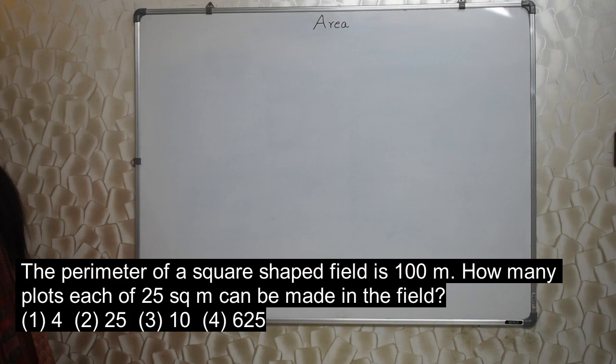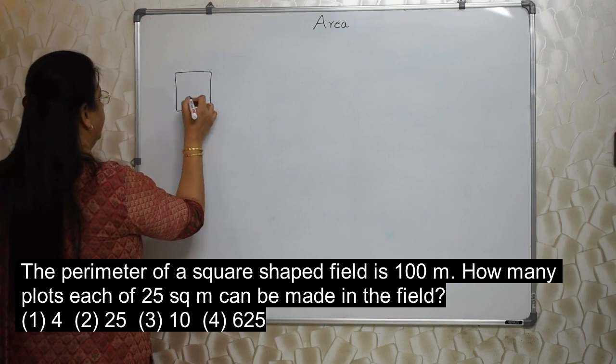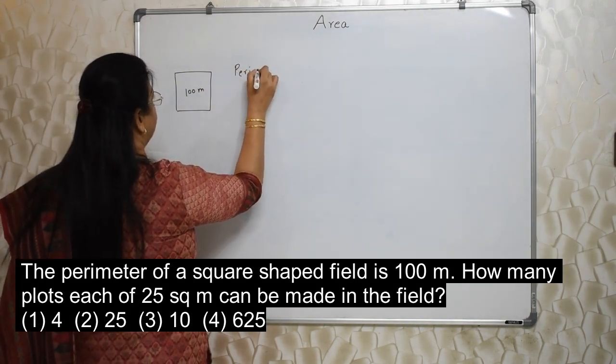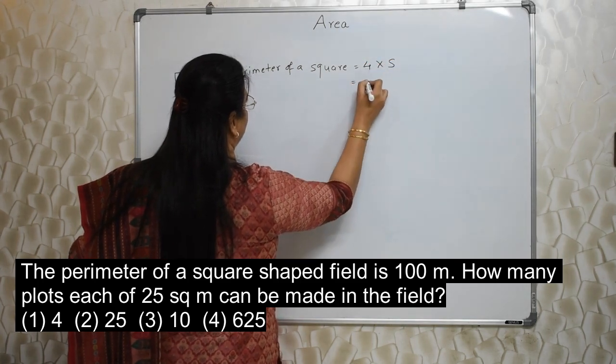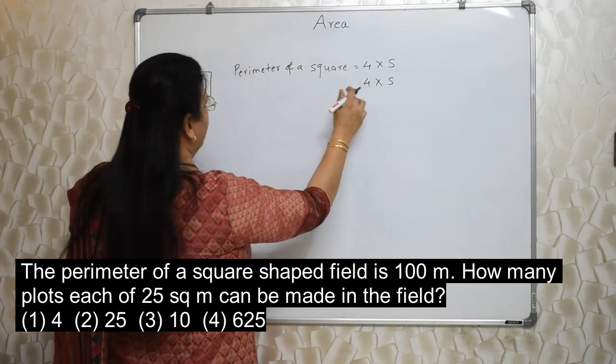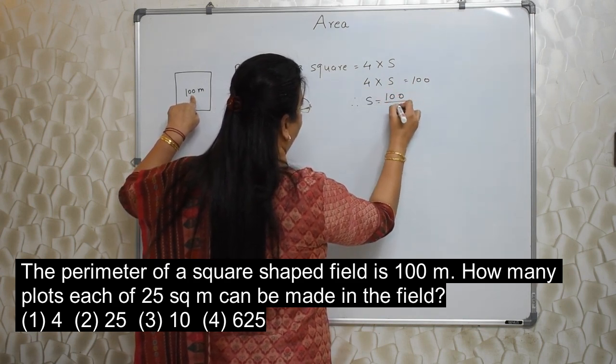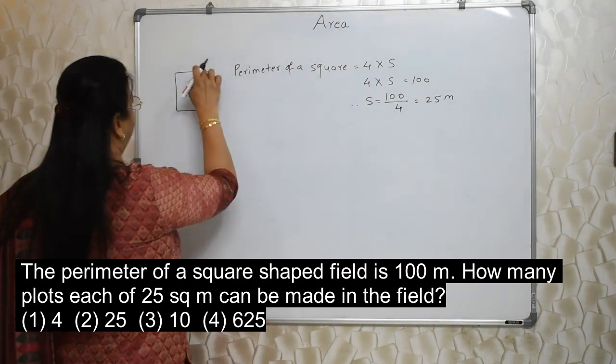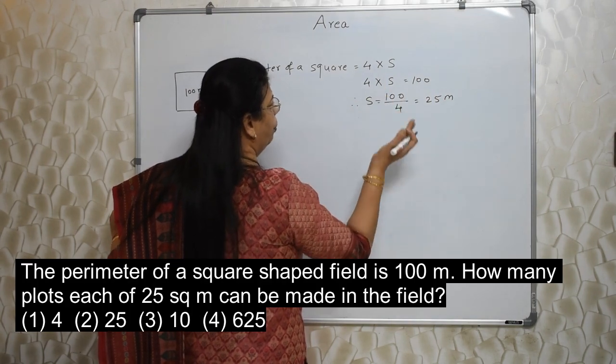The perimeter of a square shaped field is 100 meter. How many plots each of 25 meter square can be made in the field? Okay, perimeter of a square shaped field is 100 meter. Read the question properly. What is the formula of a perimeter of a square? Perimeter of a square is 4 into sides. So 4 into sides is equal to 100 meter. Therefore side is equal to 100 upon 4, that is 25 meter will be the side.